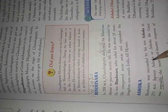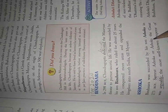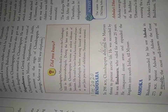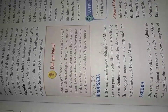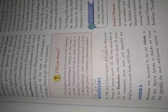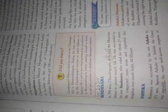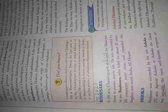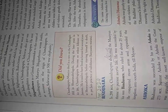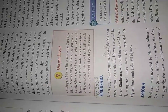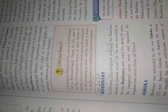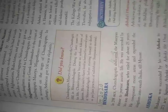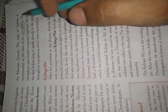Samrat Ashoka, Ashoka the Great, was probably the most well-known emperor of the Mauryan dynasty.